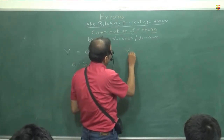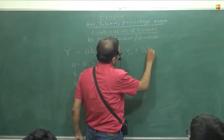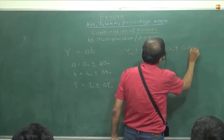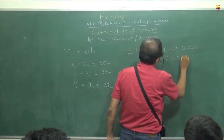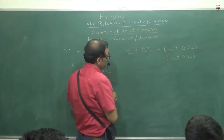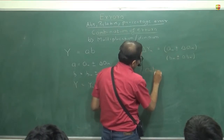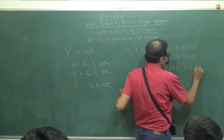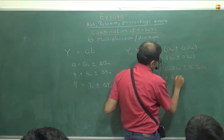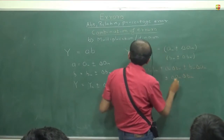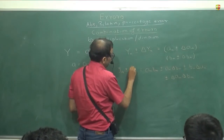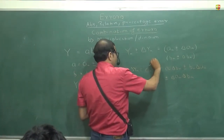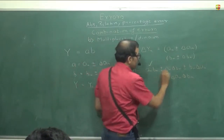So Y_mean ± δY_mean equals (A_mean ± δA_mean) times (B_mean ± δB_mean). Opening the brackets, this comes out to be A_mean·B_mean ± A_mean·δB_mean ± B_mean·δA_mean ± δA_mean·δB_mean. This entire expression equals Y_mean ± δY_mean. We can say that Y_mean equals A_mean times B_mean, so δY_mean is the rest of the expression.